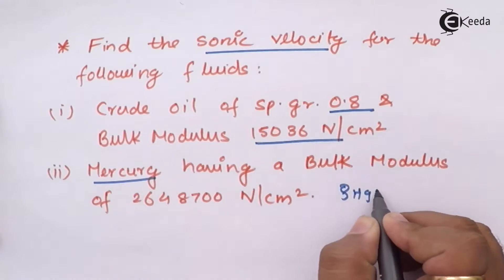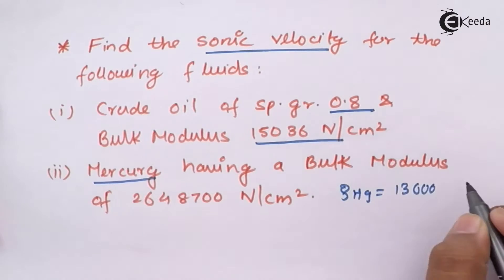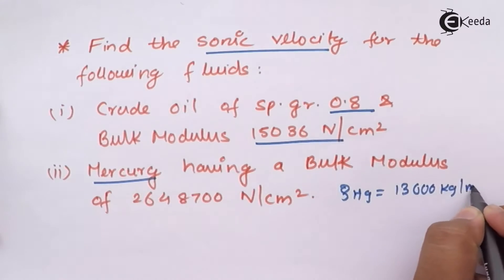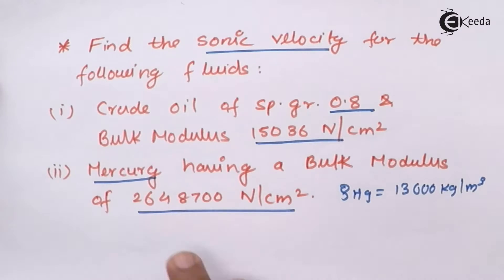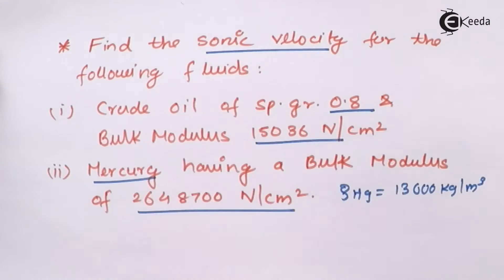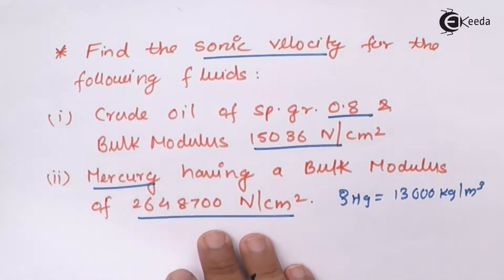The density of mercury is 13600 kg/m³, and the bulk modulus of mercury is given as 26488700 N/cm². Now let us calculate the sonic velocity with respect to bulk modulus.